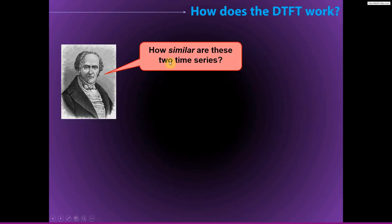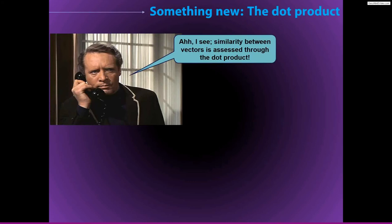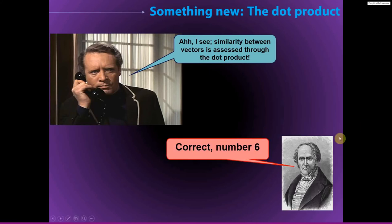Fourier keeps asking us: how similar are these two time series? The similarity is actually expressed as the dot product between the EEG data and the sine wave. Our friend Patrick McGowan asks what that even means, but he already knows the answer — the similarity between vectors is assessed through the dot product. We can conceptualize the EEG data and the sine wave as just being two vectors, and then it's straightforward to compute the dot product between them. Yes, it is the dot product.